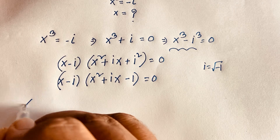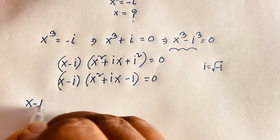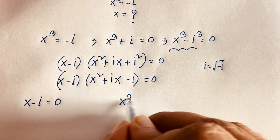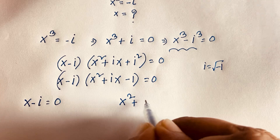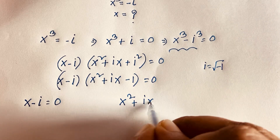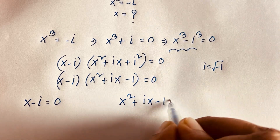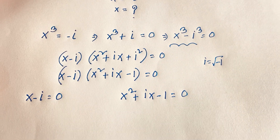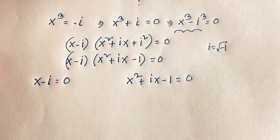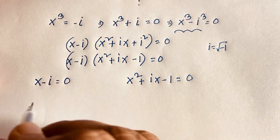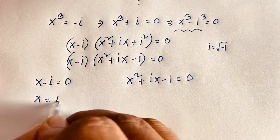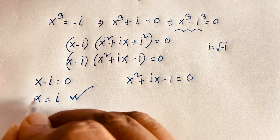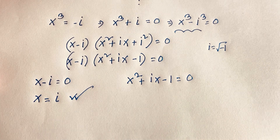Now we have two cases. The first case is x minus i equals 0, and the other case is x squared plus ix minus 1 equals 0. From the first case, moving i to the other side, we get x is equal to i.